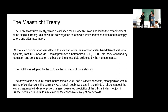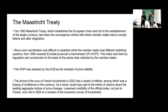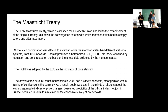Next was the Maastricht Treaty of 1992. With the establishment of the currency union, convergence criteria were laid down with which member states had to comply before and after integration. Since coordination was difficult while member states had different statistical systems, from 1996 Eurostat produced the harmonized CPI — the HCPI — fixed by regulation and constructed on the basis of price data collected by different member states. The HCPI was also adopted by the ECB as an indicator of price stability.